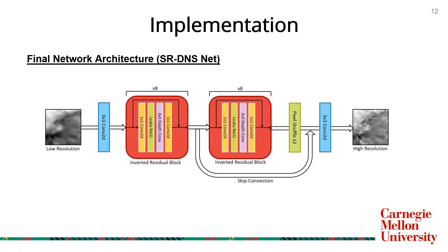So we introduce SRDNSNet, a framework for the efficient reconstruction of high-resolution turbulence data. SRDNSNet uses 16 inverted residual blocks, a global skip connection, along with pixel shuffle for upsampling.